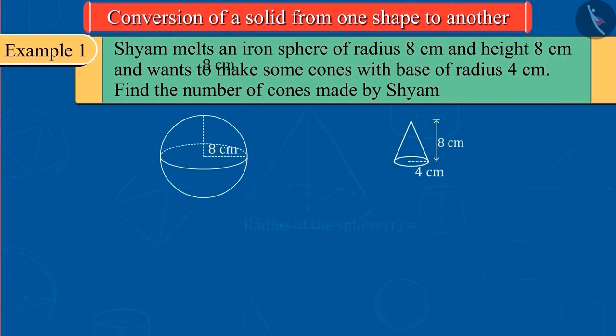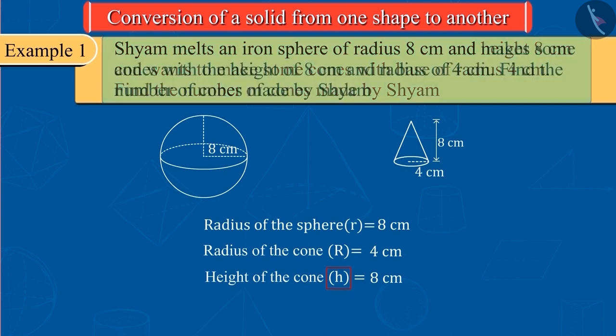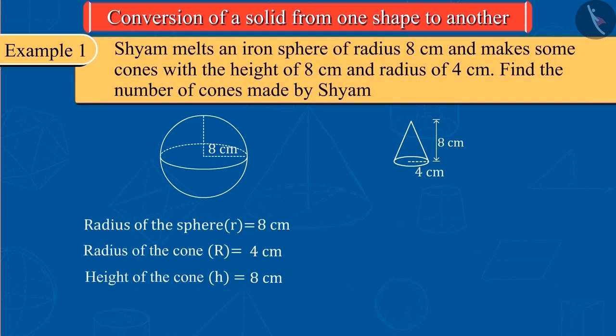From the question, let us consider r as the radius of the sphere and let R be the radius of the new cones formed, height is h. So now, can you calculate the number of cones made by Shyam?